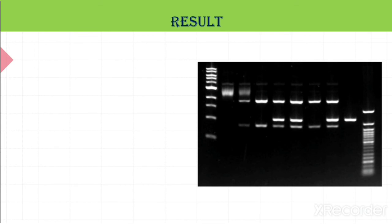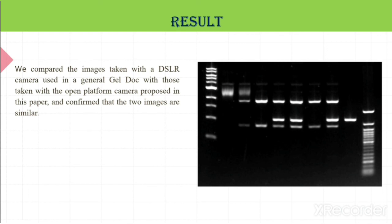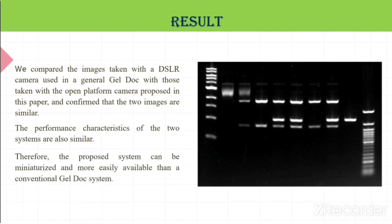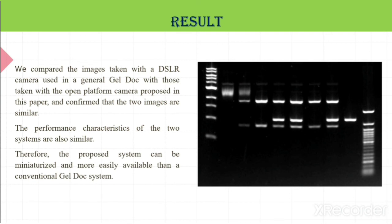These are the results — when you do agarose gel electrophoresis and then use the gel documentation system to see the bands, this is the image which gives us the exact bands of the proteins or nucleic acids under UV light. We compared the images taken by the DSLR camera used in the general gel doc with those taken with the platform camera proposed in this paper and confirmed that the two images are similar. The performance characteristics of the two systems are so similar that the proposed system can be miniaturized and more easily available than the conventional gel doc system.